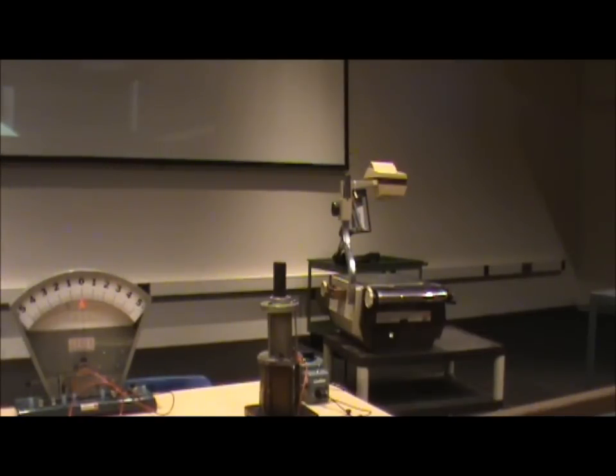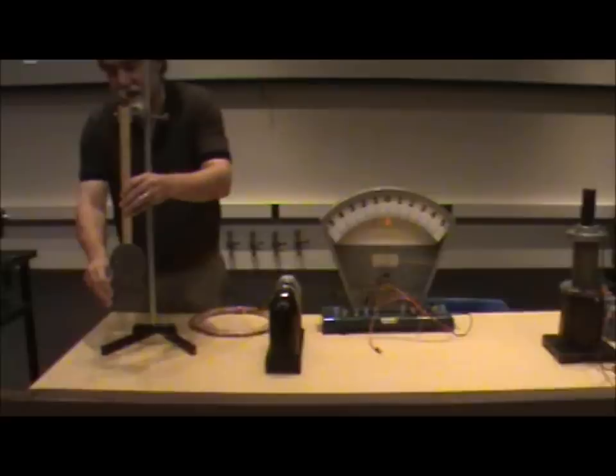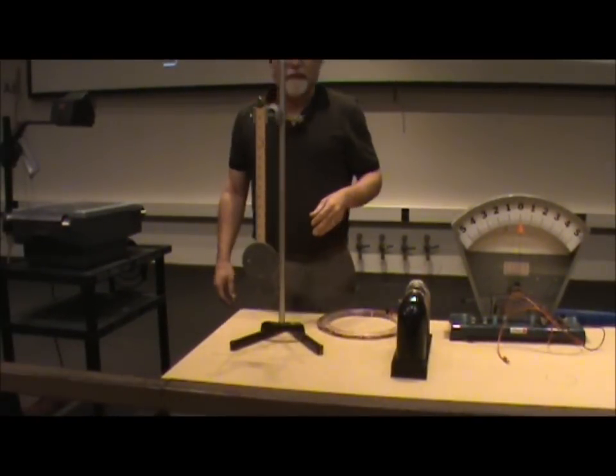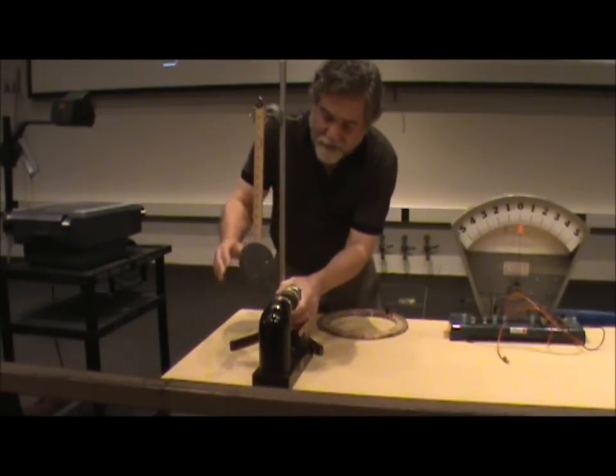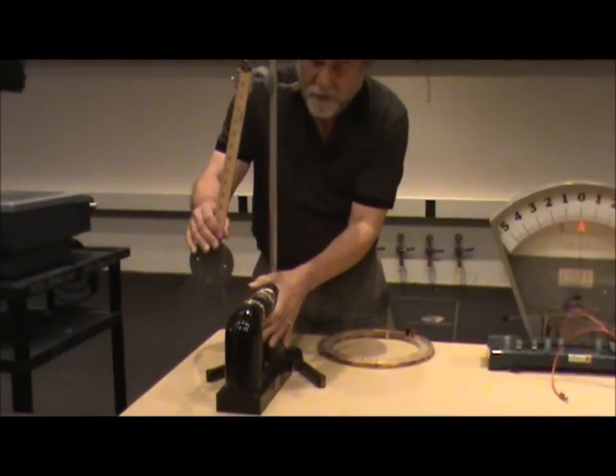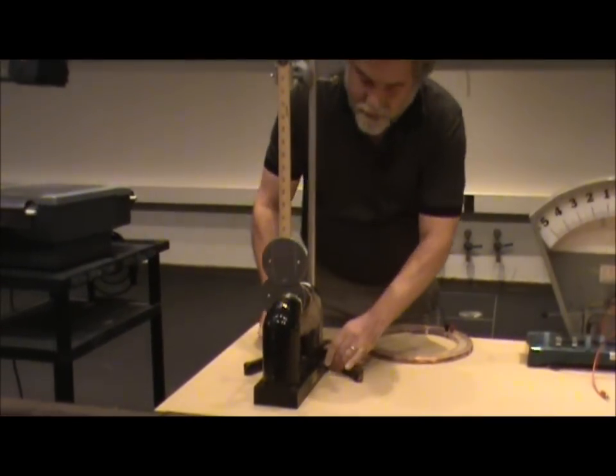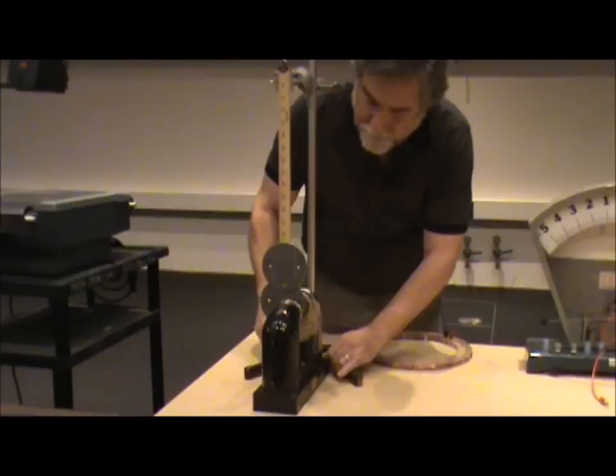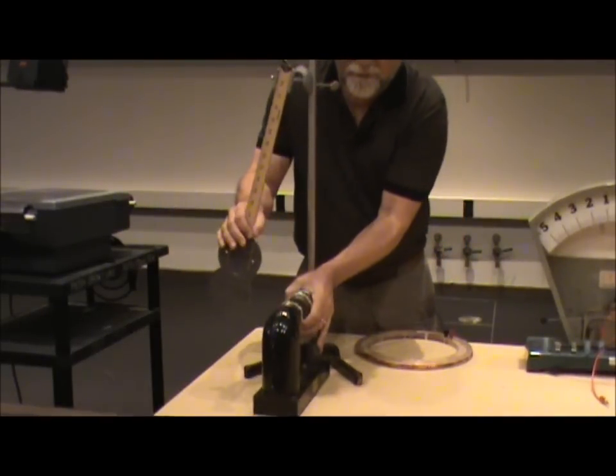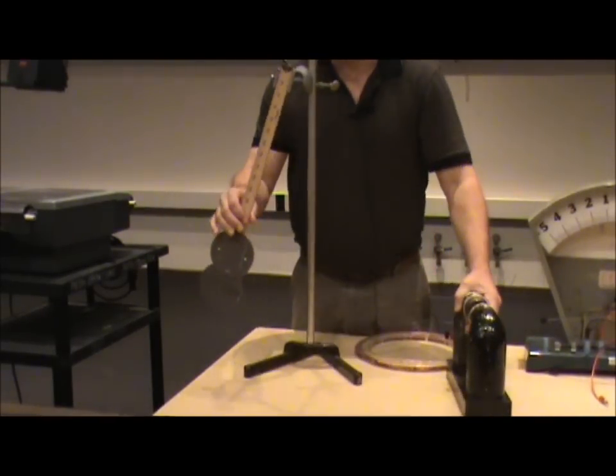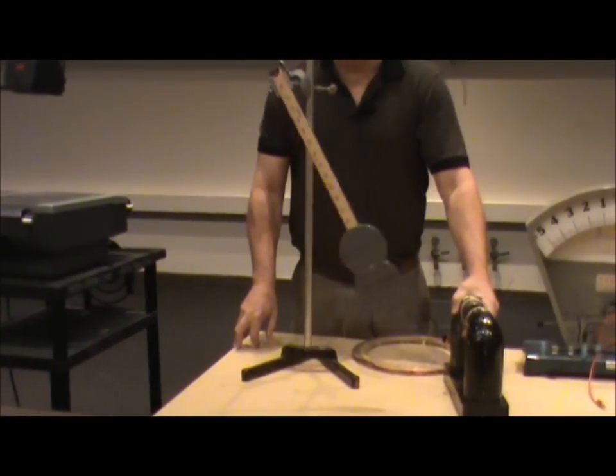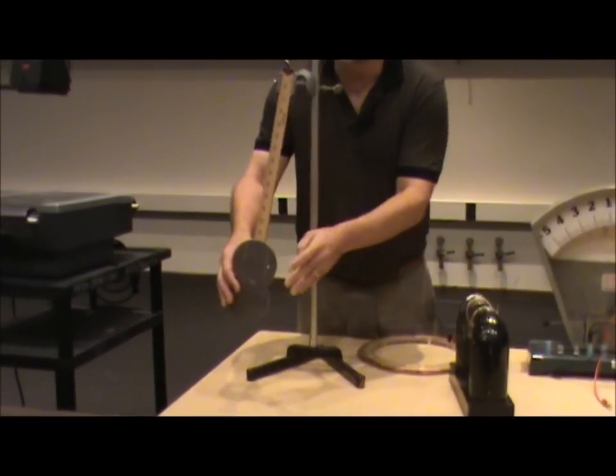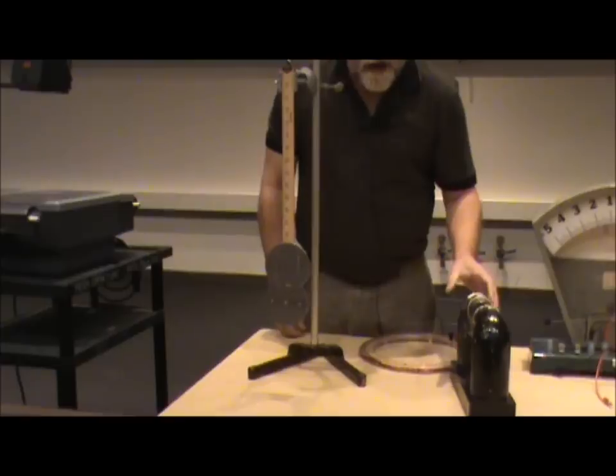That current in a conducting loop with the changing flux can also be seen if I just pass a piece of metal through a coil. So what I've got here is actually just a piece of metal on a pendulum. So this is a piece of aluminum down here. It is not magnetic.